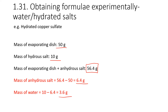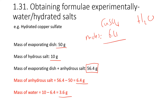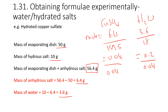We now calculate the moles of the salt and the water and compare their ratio. Moles of copper sulfate = 6.4 g ÷ 159.5 (Mr) = 0.04 mol. Moles of water = 3.6 g ÷ 18 = 0.2 mol. Dividing both by the smallest (0.04): copper sulfate gives 1, water gives 5. So the ratio is 1:5, giving CuSO₄·5H₂O.